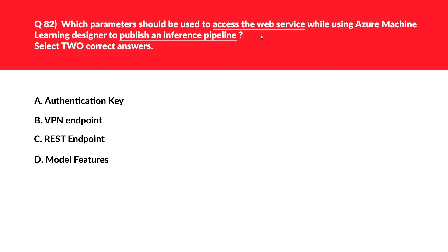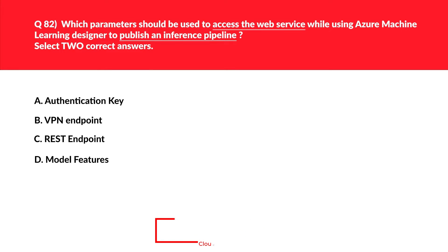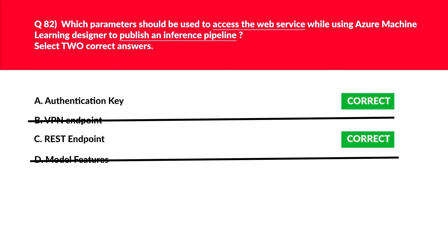We are at question 82. Since the service is exposed as a REST API, we need a REST API key and a REST endpoint to authenticate the request. Therefore, we'll keep options A and C, reject the rest, and lock them as the correct answer.